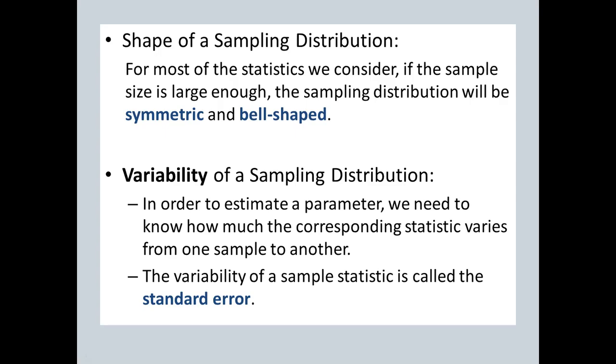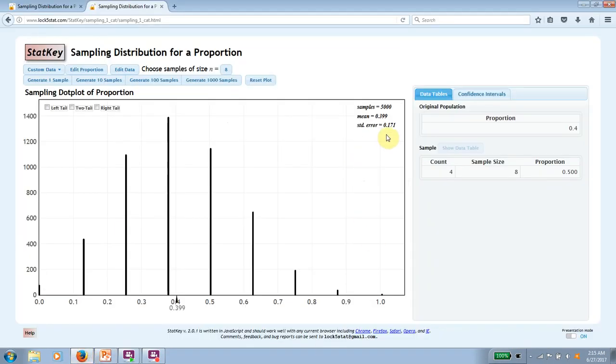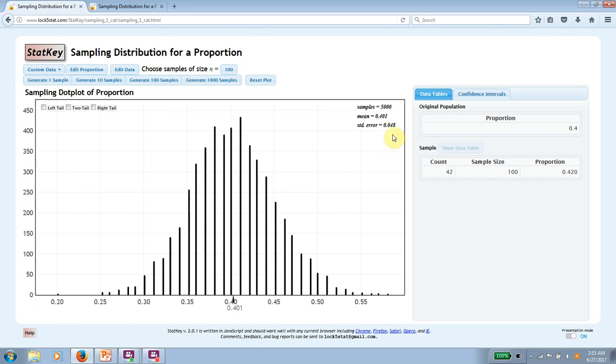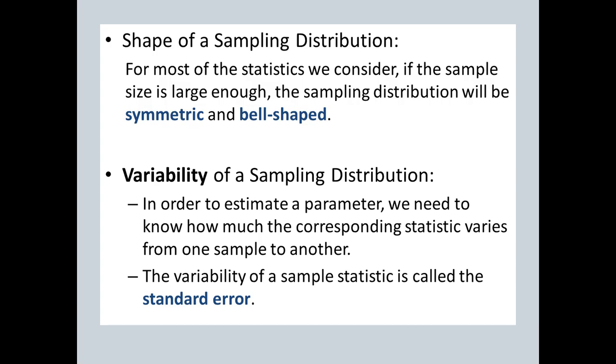So the main thing that we've kind of already established is we want to be able to quantify how much the statistic varies from one sample to another. That is a thing that we can do. It has a name, and the thing that we can compute that measures how much variability there is from one statistic to another is something called the standard error. If I go back to StatKey for a second, you can see it. Here it is. It's in the upper right corner of the graph. So this is the graph for samples of size 8. There is the standard error of 0.171.